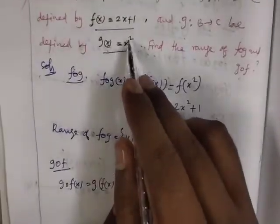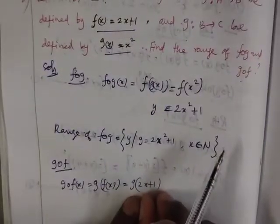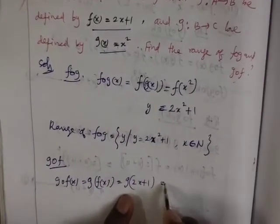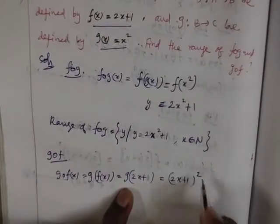In function g, which is x squared, replace x by 2x + 1. That gives us (2x + 1) whole squared.